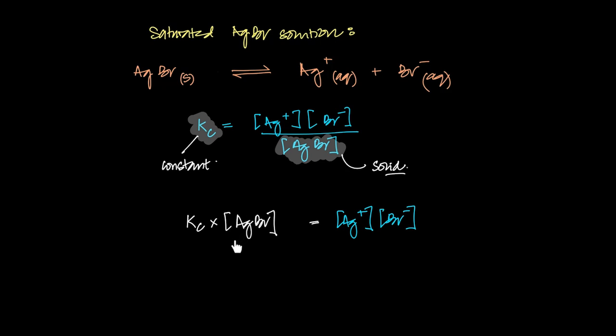The substance solid's concentration is constant, and why is that constant? Because what's really a concentration for a solid? It's its density measured in moles per dm³.